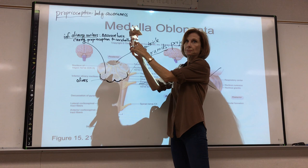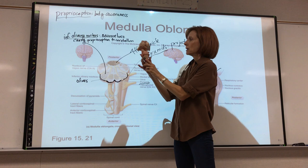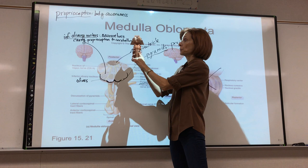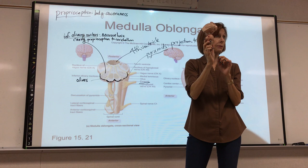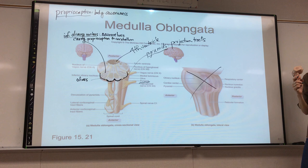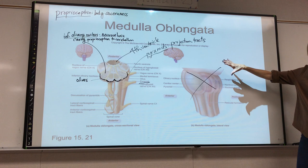Notice that on these models and diagrams you can see many cranial nerves sticking out all over the place. You do not need to identify them all on these models — you'll identify cranial nerves on a diagram, which we'll look at in a little while.